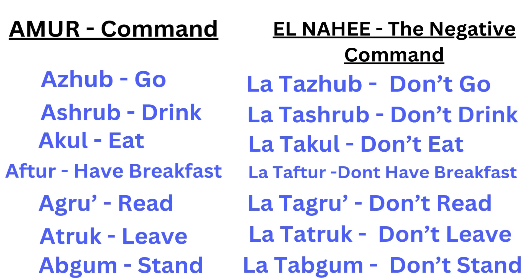So we have Amur — command — and El-Nahi — the negative command. Remember the word Zahub. The A goes to the front of the word. The command form always begins with the letter A. So all we did with Zahub, to go, is move the A to the front of the word. So it becomes Azhub — go. Then we have Ashrab — drink. Akal — eat.